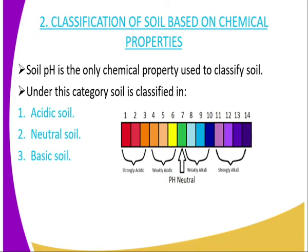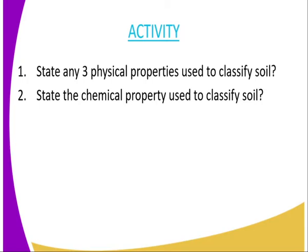Acidic soils are those that have a pH of less than 7. Soils with a pH of 7 are referred to as neutral soil. On the other hand, those soils that have a pH of more than 7 — that is, 7 to 14 — are referred to as basic or alkaline soils.